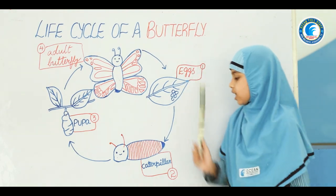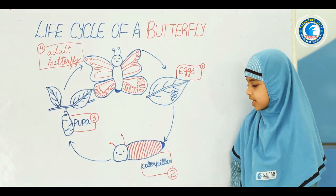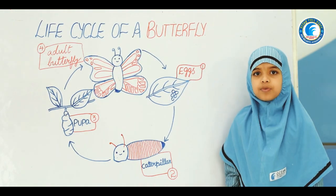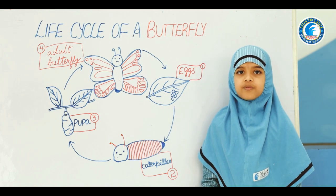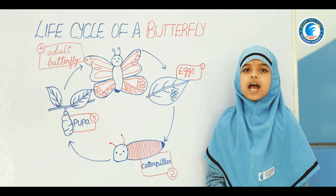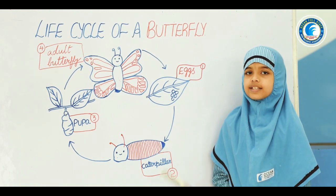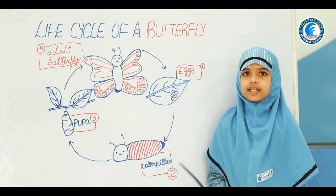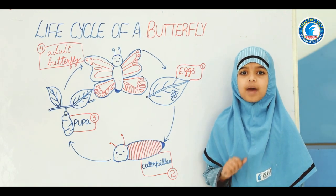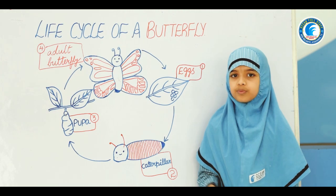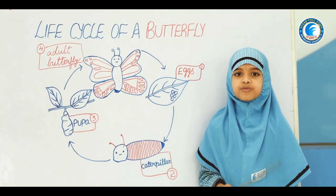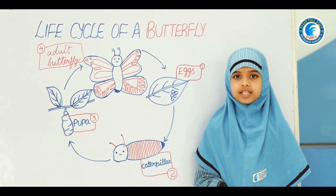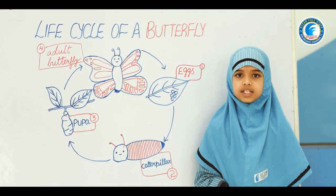At the second stage, a caterpillar hatches out of the eggs and it eats the same egg that it came out of. It eats leaves for many days and grows in size.